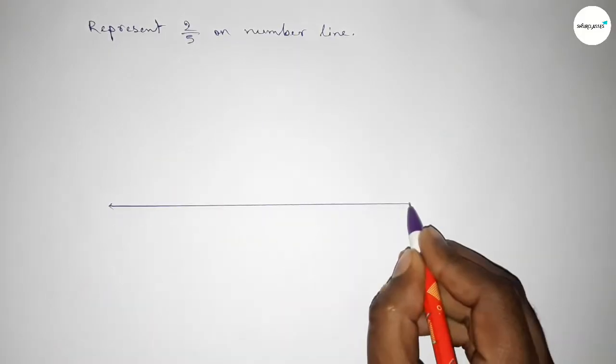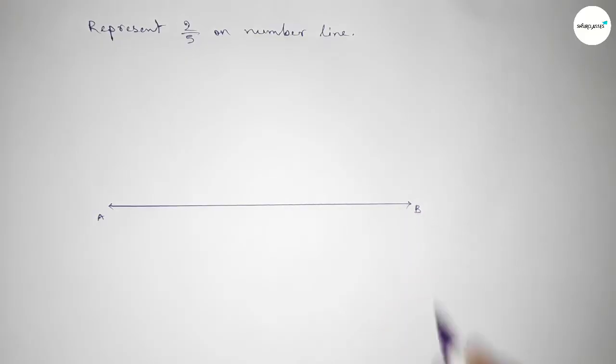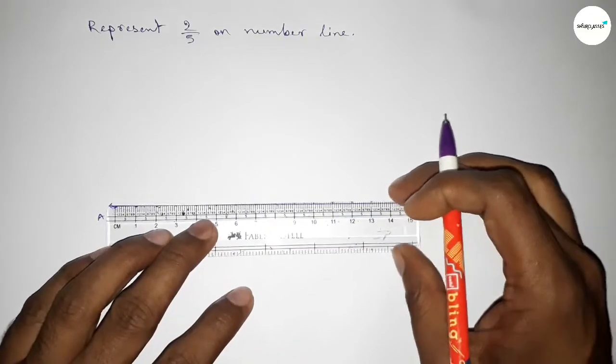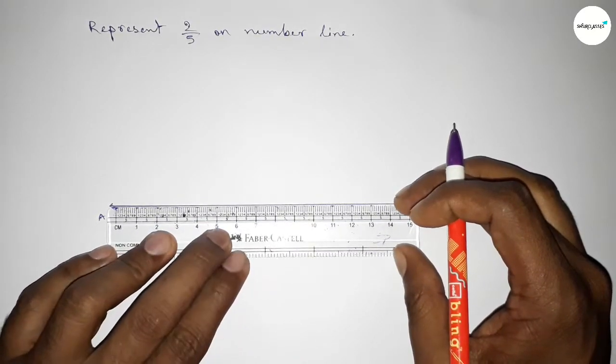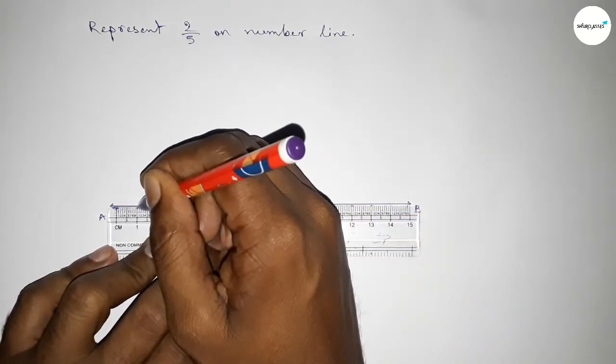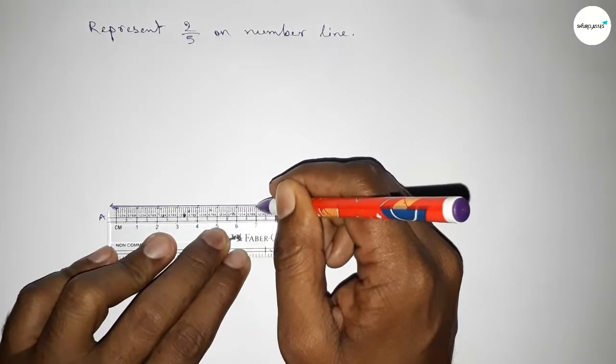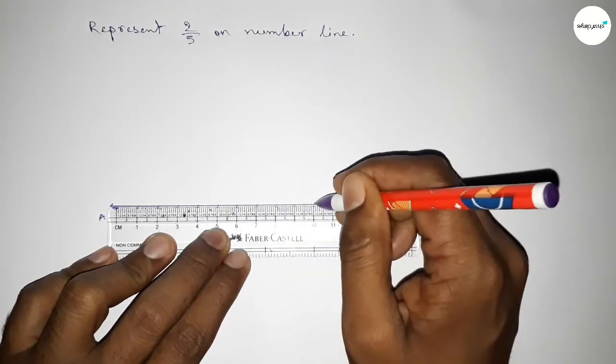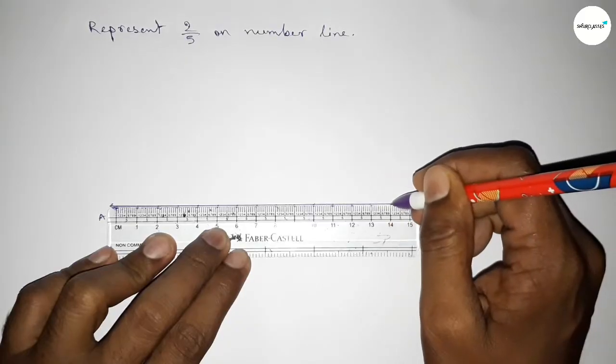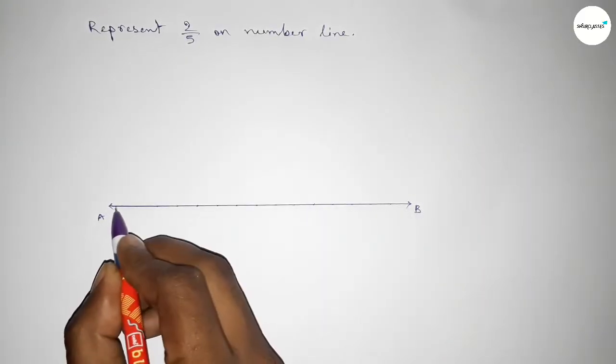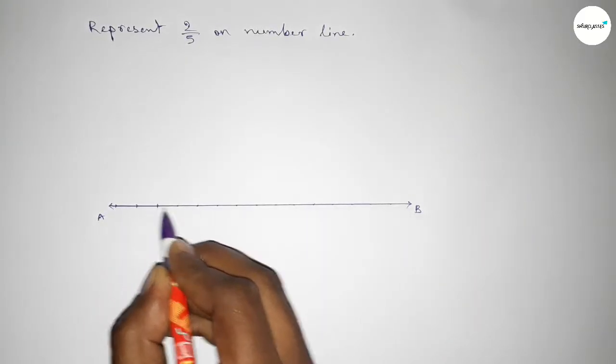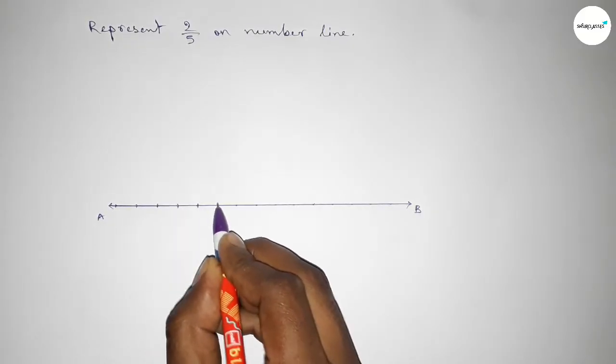A line and taking arrow marks on both sides, and this is AB line. Next, we have to mark the numbers on the line by using a scale. Marking the numbers on the line with deep color to understand perfectly.